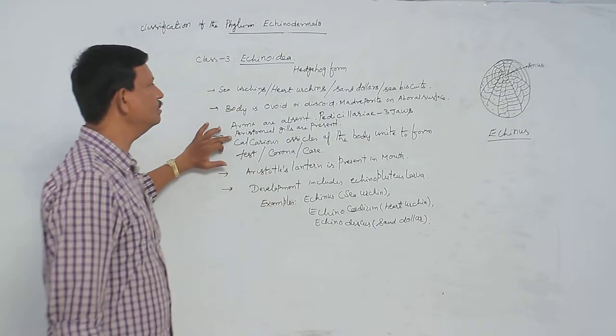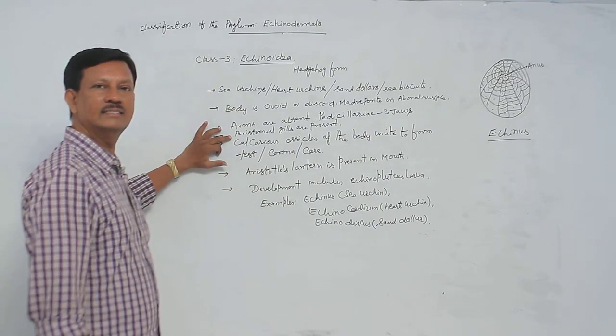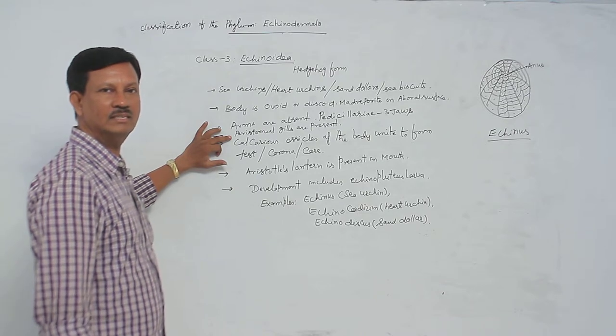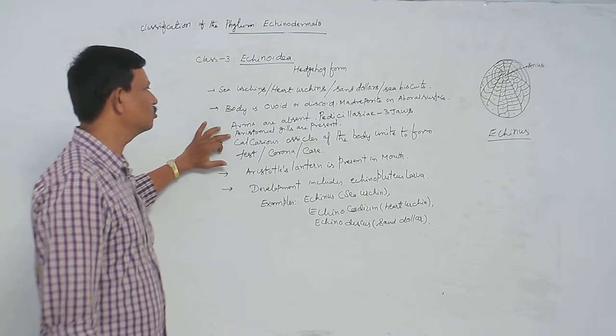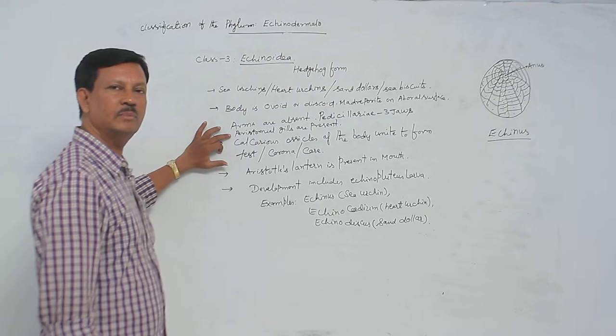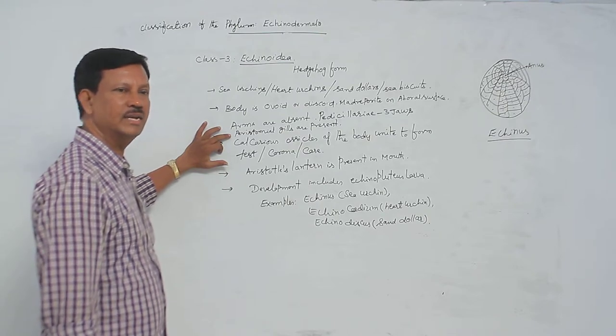Peristomal gills are present. These are special type of gills present in the peristomal region. Hence they are known as peristomal gills. They help in respiration.